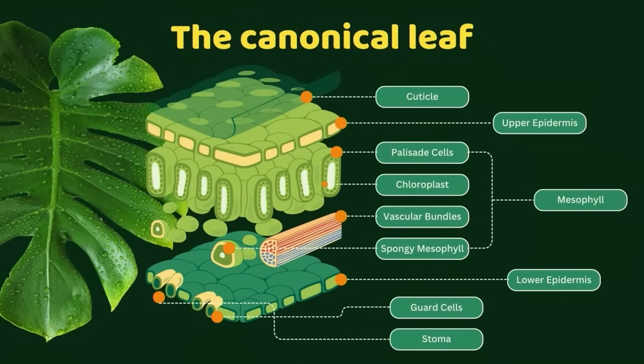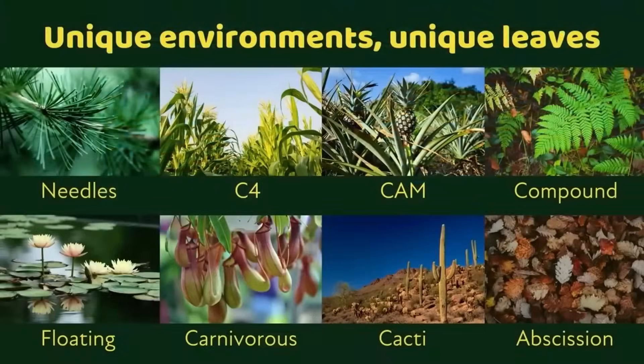What you actually see is that every unique environment around the planet has a different leaf type that's specially designed for that climate, for that environment. What I just showed you is a typical canonical leaf, but if you look in all these different environments — I've just shown a few on the screen — you'll actually see that there's a different type of leaf design for each environment. Let me give you an example.